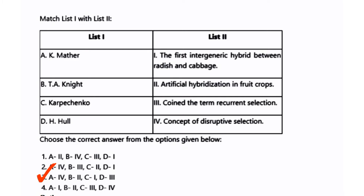The next is a match-the-following question on plant breeders. The correct answer is option 3: Kammoto introduced the concept of disruptive selection, Tannight introduced artificial hybridization in fruit crops, Karpechenko is the first intergeneric hybrid between radish and cabbage, and H. Hald coined the term recurrent selection.